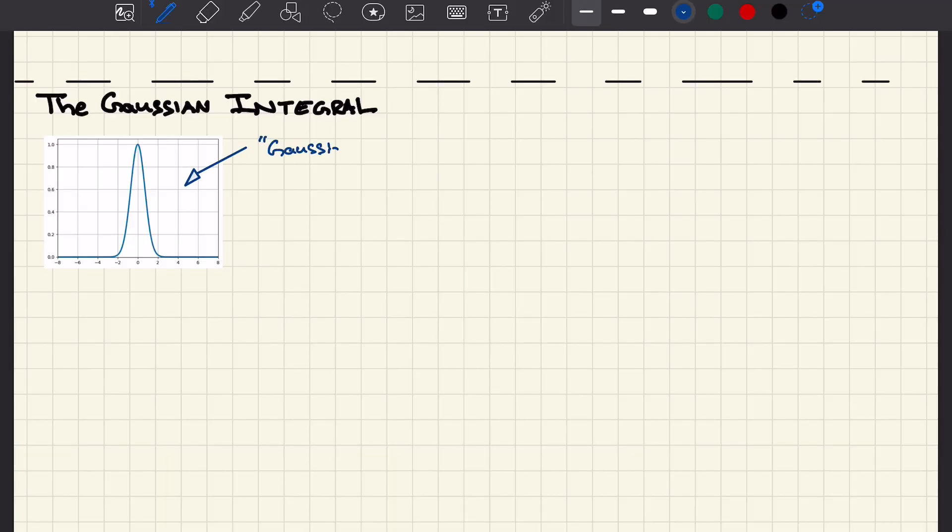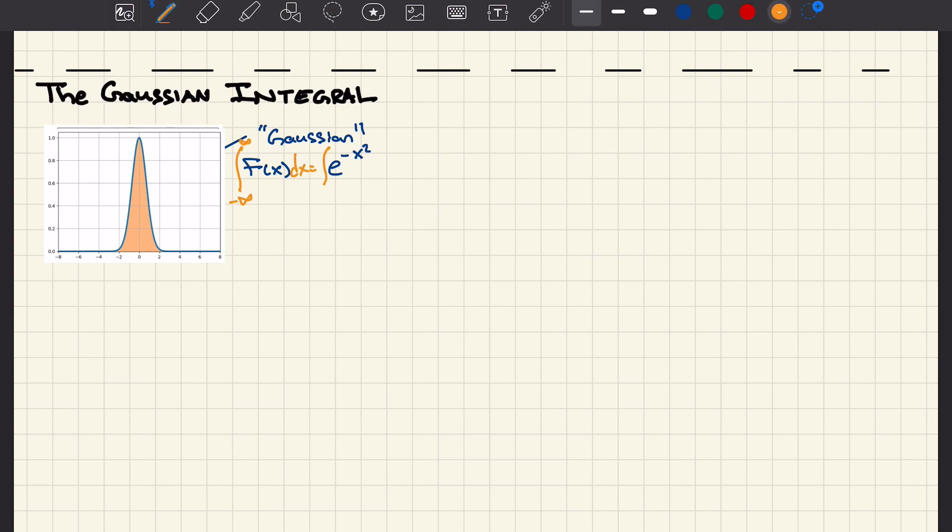Let's go about calculating this. Just to recall what the Gaussian is, it's the function e to the minus x squared. What's fascinating about it is if we calculate the area under the curve, that is the integral from negative infinity to infinity, the answer somehow comes out to be the square root of pi.